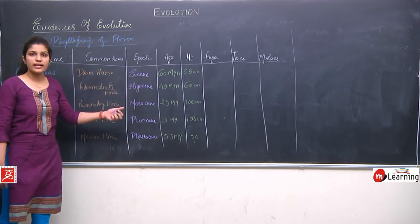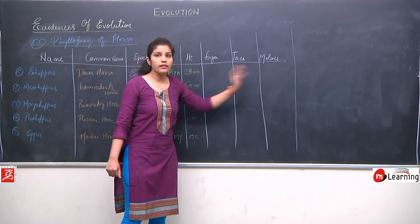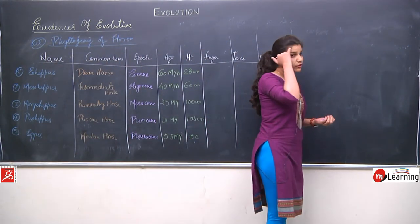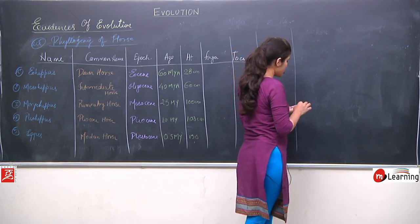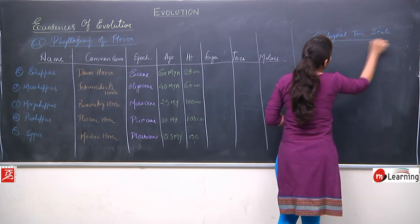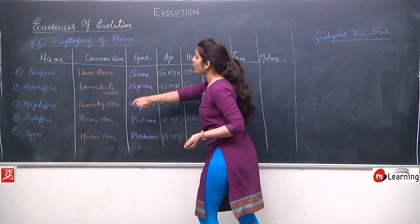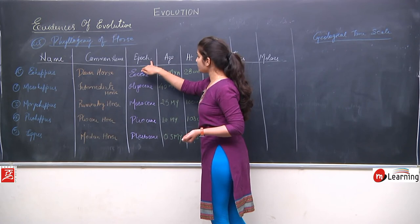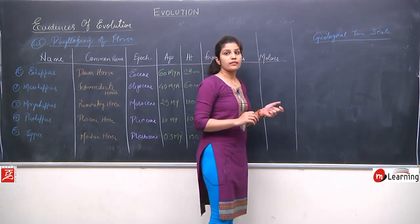We will discuss certain factual changes over time — the fingers, toes, and molars. Before discussing phylogeny of horse, let us briefly discuss the geological time scale, because the evolutionary course of horses has been seen in certain epochs and we need to understand what these epochs are.